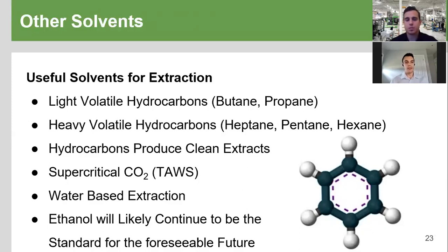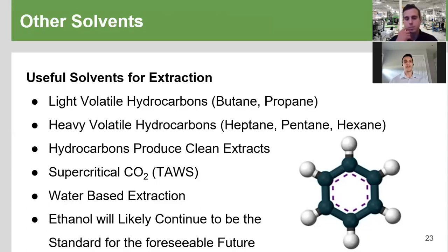Heavier hydrocarbons like heptane — almost like gasoline, just one carbon molecule less — are liquid at room temperature and have similar extraction properties to the lighter ones but are much easier to handle in larger amounts. Heptane is about 310 kJ/kg, so under half of ethanol — still a big energy saving. Both hydrocarbons produce a very clean extraction because, unlike ethanol, they're just non-polar. They can't dissolve water, starches, sugars, or chlorophylls, so water forms a separate layer and can be mechanically separated. This solves the water buildup problem, though hydrocarbons are significantly more hazardous than ethanol.